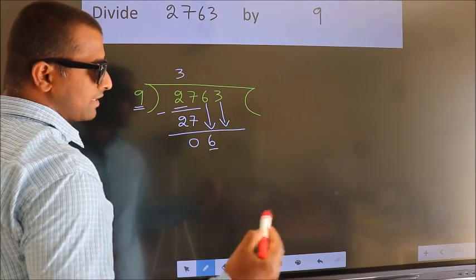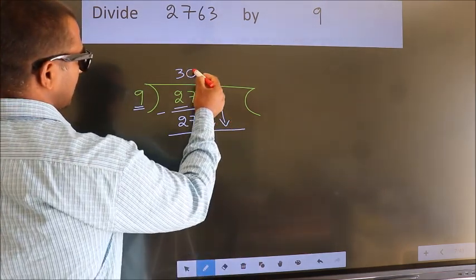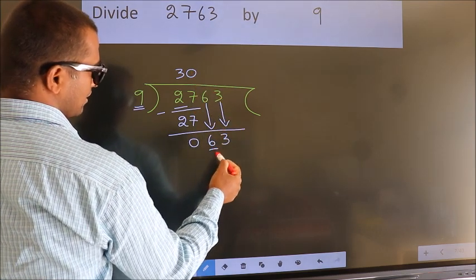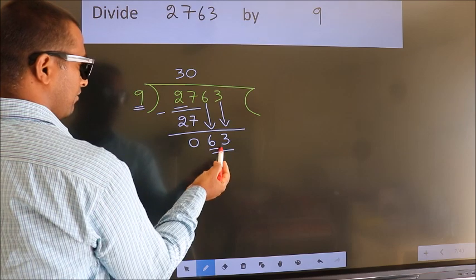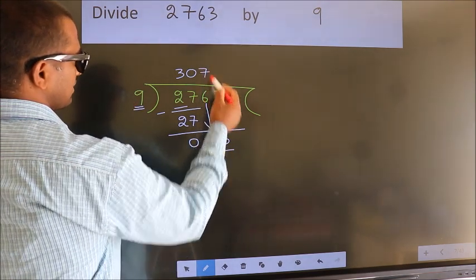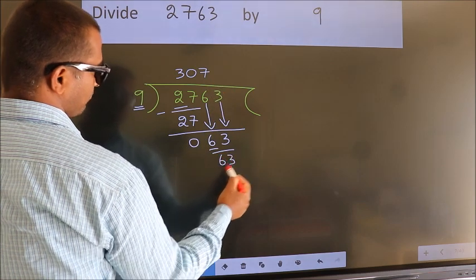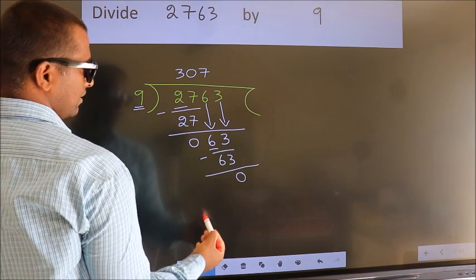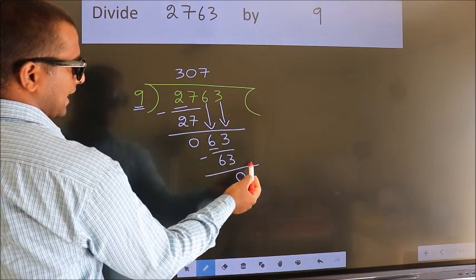...put 0 here, then only we can bring down this number. So 63. When do we get 63 in the 9 table? 9 times 7 is 63. Now we subtract, we get 0. No more numbers to bring down.